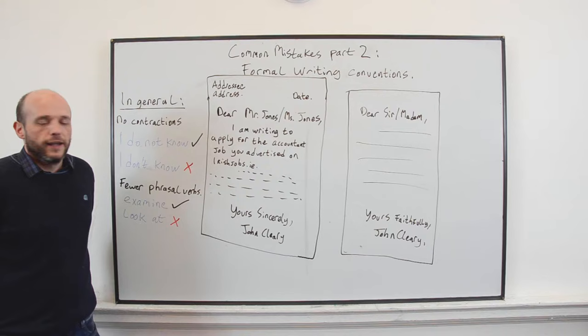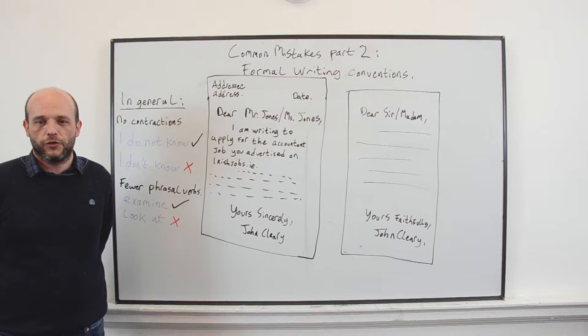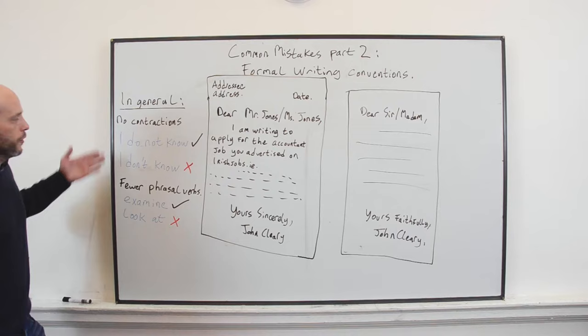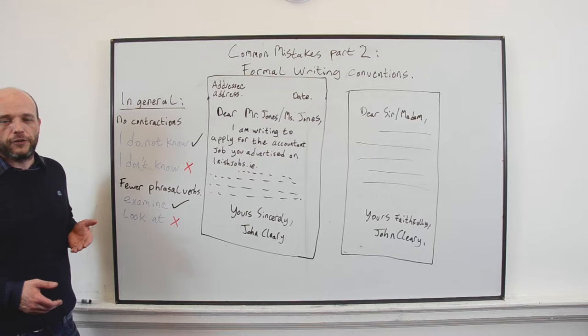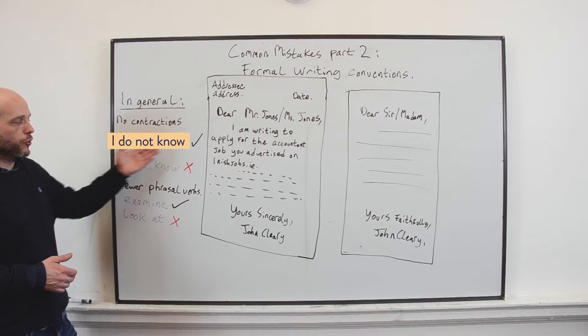First of all, I'd like to talk about two general points. When we write formally in English, there are two major differences between formal and informal written English. The first is no contractions. When we speak English, I say I don't know. We might even say I dunno. But when we write this down in a formal letter, we must not contract and spell out each individual word. So it's I do not know instead of I don't know.